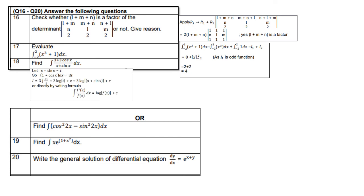Question 18: integrate 3(1 + cos x)/(x + sin x) dx. Let t = x + sin x, so dt = (1 + cos x) dx. The integral becomes 3∫ dt/t = 3 log|t| + C = 3 log|x + sin x| + C. For the related question, ∫(cos²2x − sin²2x) dx = ∫cos 4x dx = sin 4x / 4 + C.